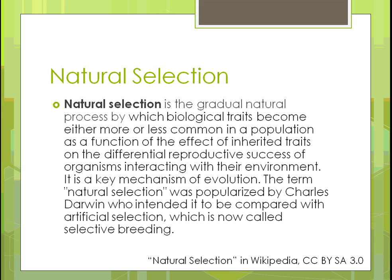Natural selection is defined as the gradual natural process by which biological traits become either more or less common in a population as a function of inherited traits on the differential reproductive success of organisms — and that's all occurring naturally through interaction with the environment. It's a key mechanism of evolution. The term was popularized by Charles Darwin, who intended it to be compared with artificial selection — what we currently call selective breeding — where we aren't letting it happen naturally.